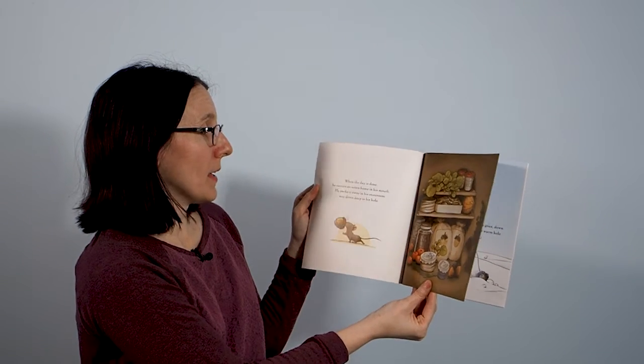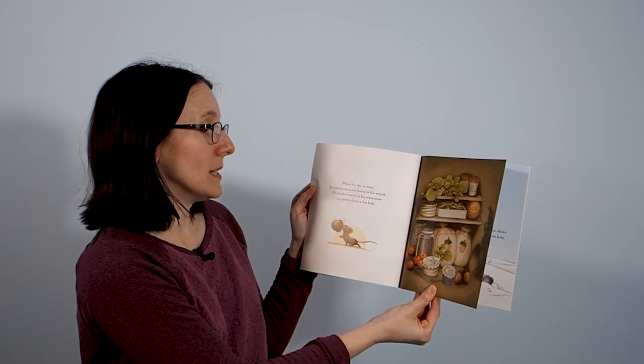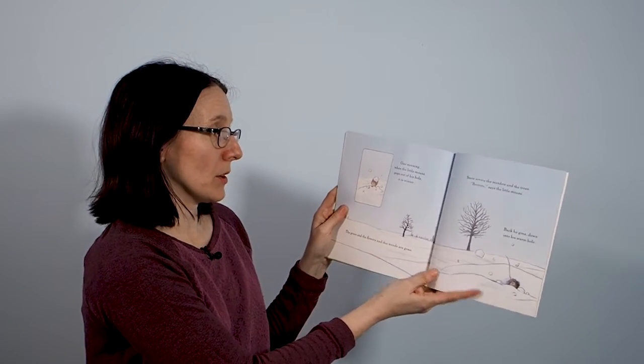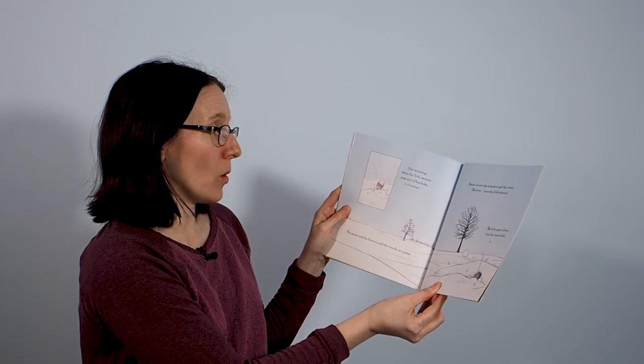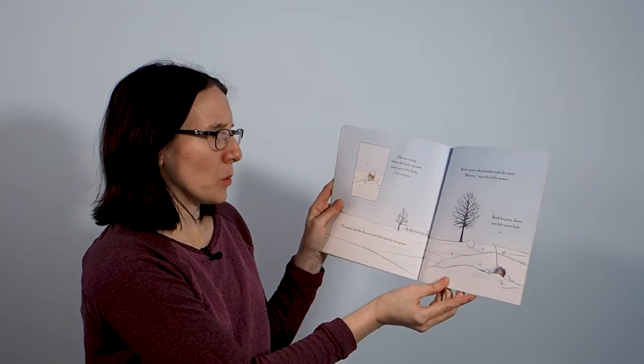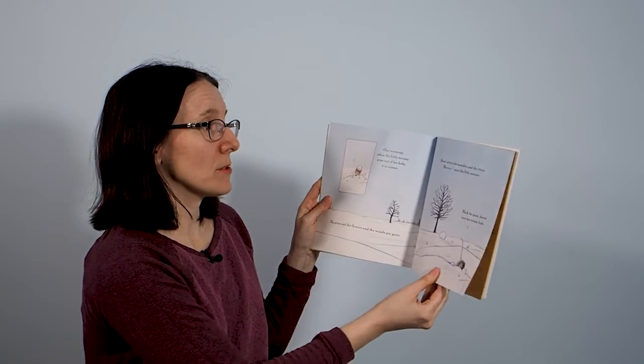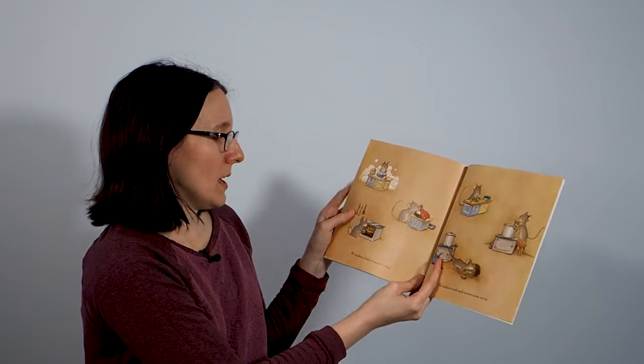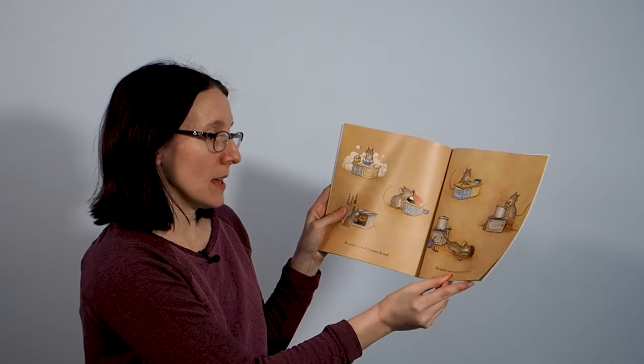And when the day is done, he carries an acorn home in his mouth. He packs it away in his storeroom deep deep down in his hole. One morning in winter, the little mouse pops out of his hole, but it's winter. The grass and the flowers and the weeds are gone, and the snow covers the meadows and the trees. Burrs, says the little mouse, and back down he goes into his warm hole.